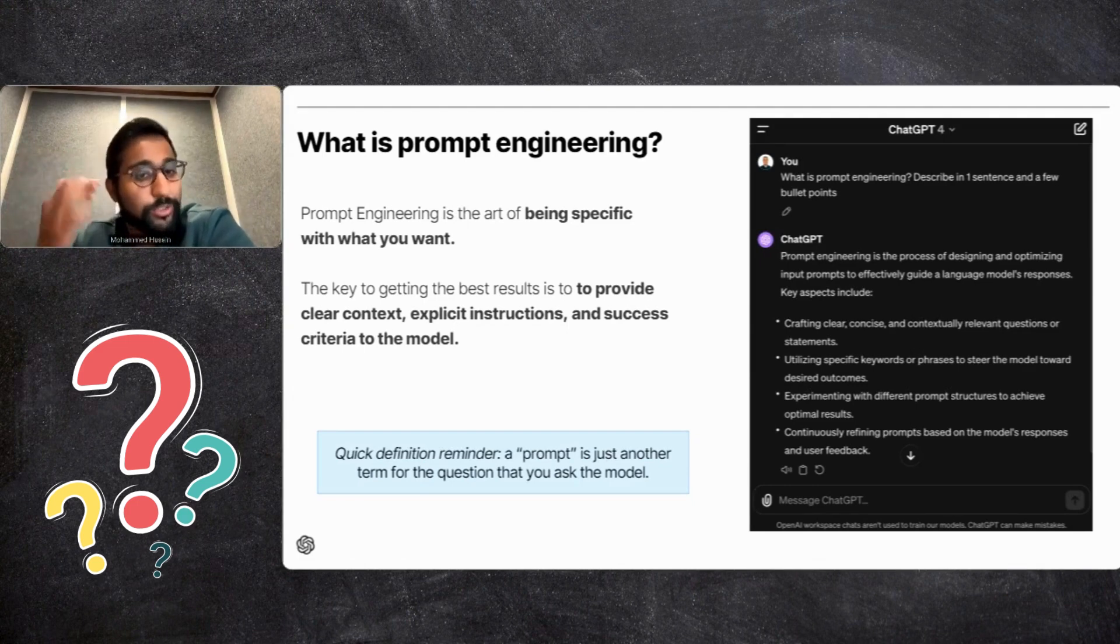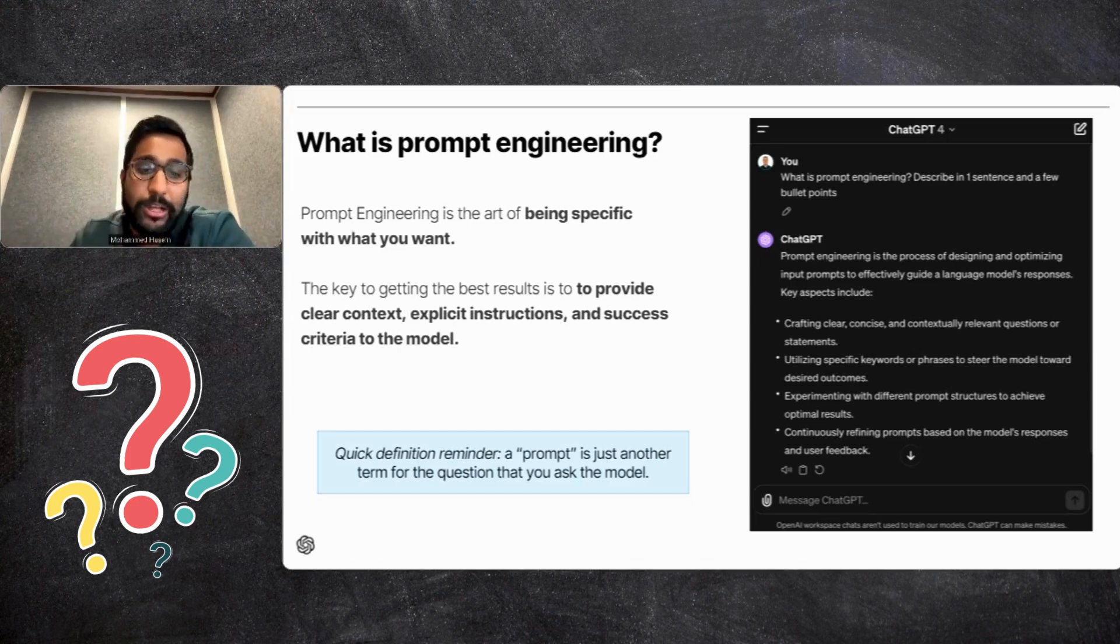The key to getting the best results is to provide clear context, explicit instructions, and success criteria to the model. At a high level, that's how we at OpenAI think about prompt engineering. And broadly, if you use other tools, all of this is also going to be applicable to those tools as well.